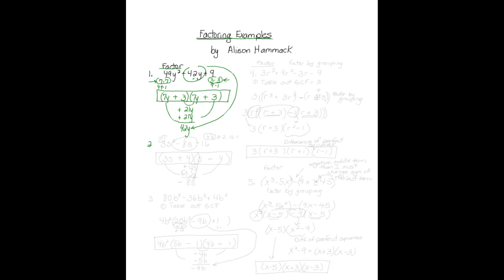Number two: three s squared minus eight s minus sixteen. I want to factor this. So three is three times one. Sixteen could be four times four, eight times two, or sixteen times one. I'm going to start with a pair that are closer together. So I have three s times s, and then my fours will go in these positions — four and four. Now I need to do my smile.